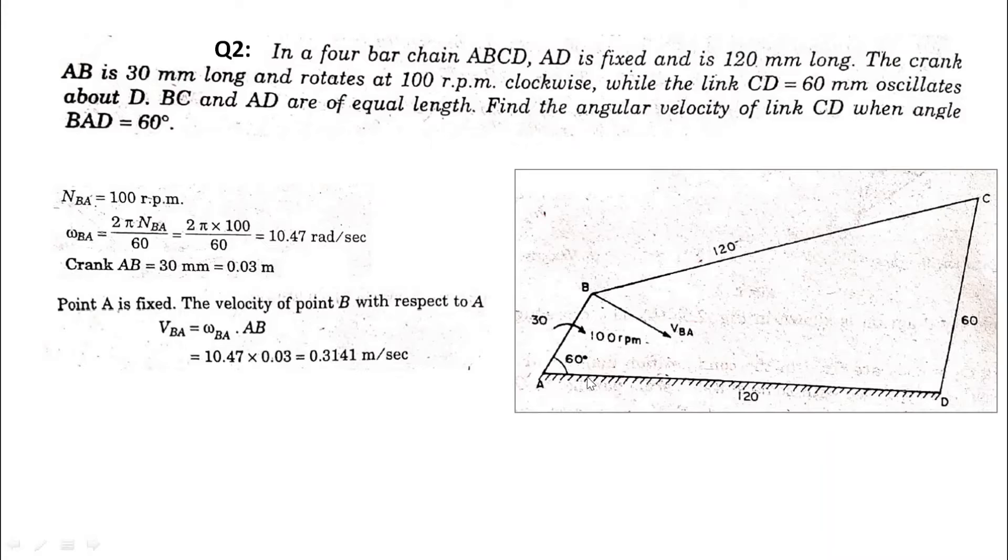We have given AD that it is fixed. Its length is 120 mm. Crank AB is 30 mm long and it is rotating with 100 rpm in the clockwise direction. Link CD is 60 mm. It is oscillating about this point B. Now BC and AD are both same length. We have to find the angular velocity of link CD when the angle BAD is 60 degrees.